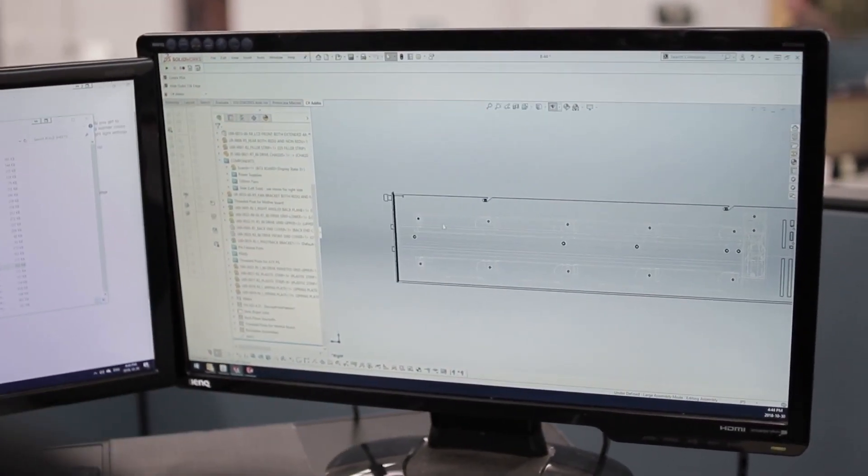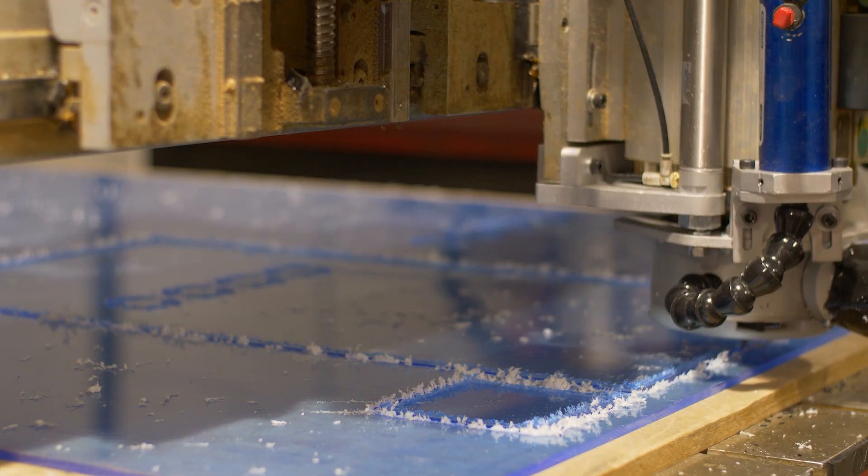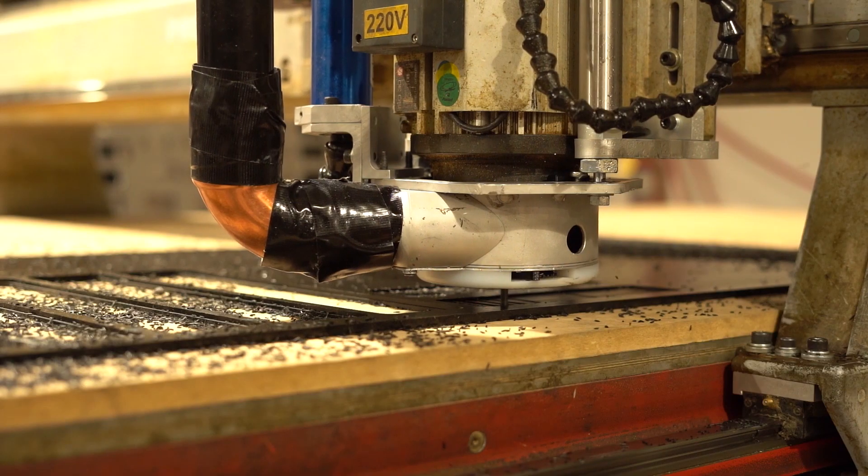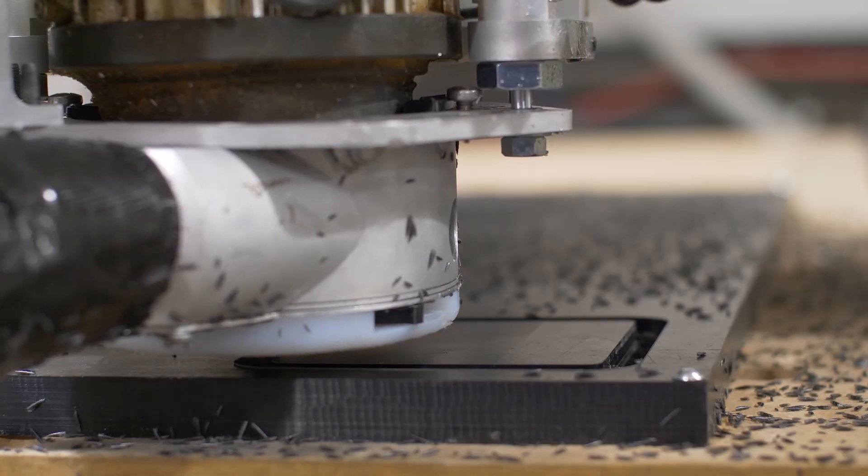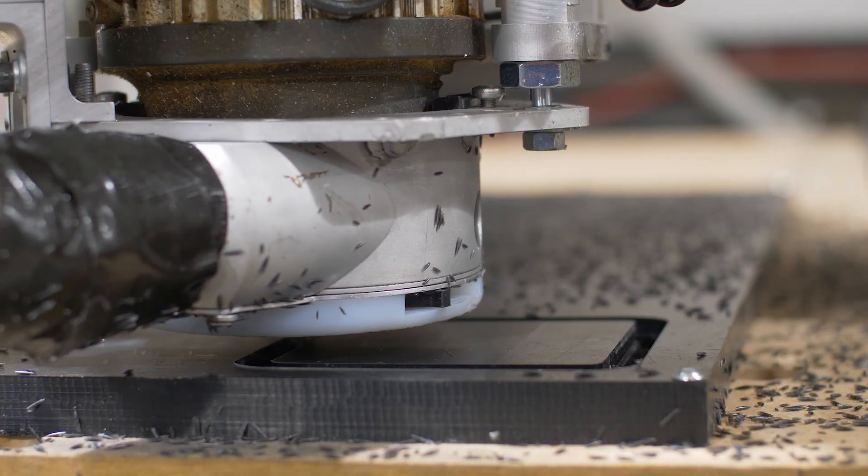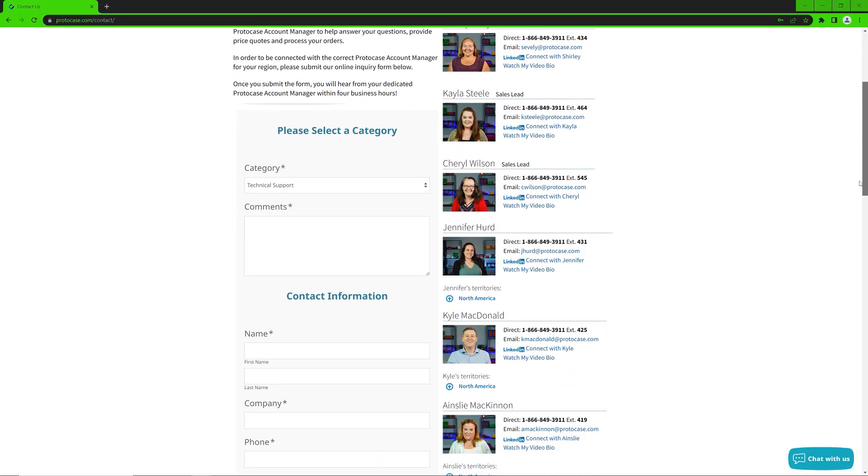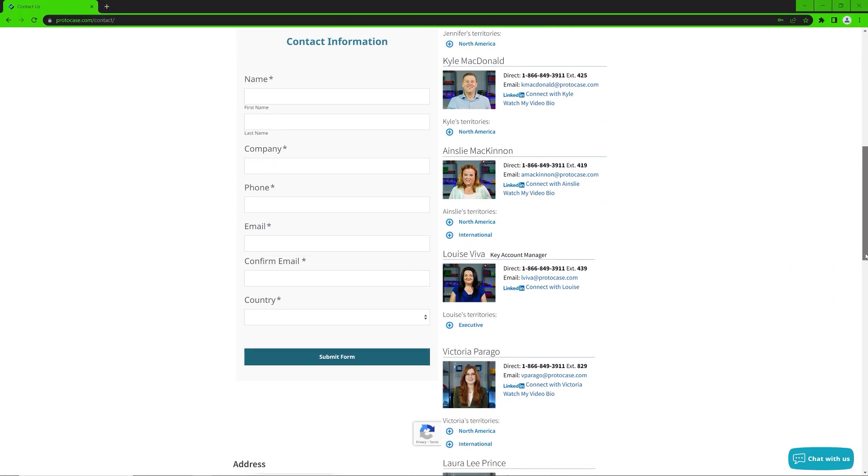In the end, Protocase is here to manufacture your panels, brackets, and enclosures exactly how you envision it in whatever quantity that you require. Protocase can help you incorporate either type of acetyl into your next project, whether it be copolymer or homopolymer. Reach out to your account manager or visit our website to get in contact and get your next project started.